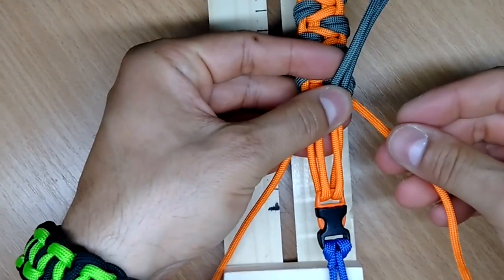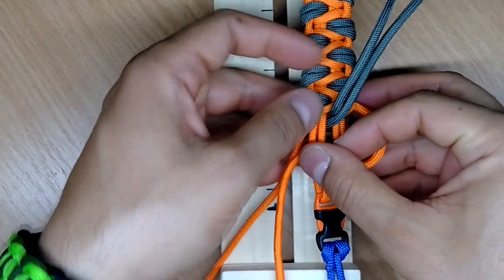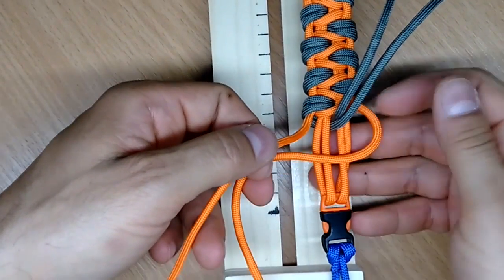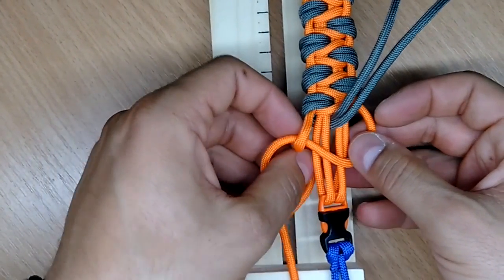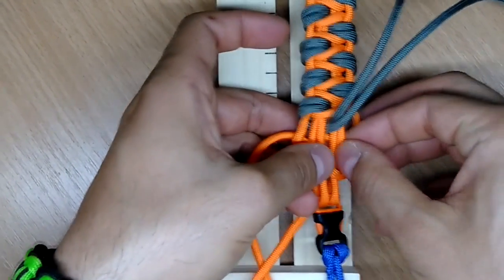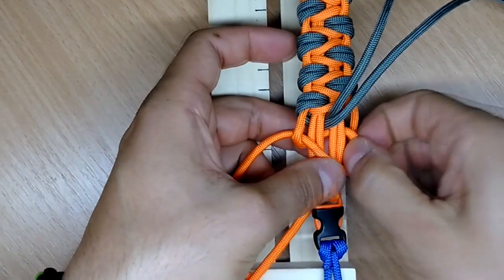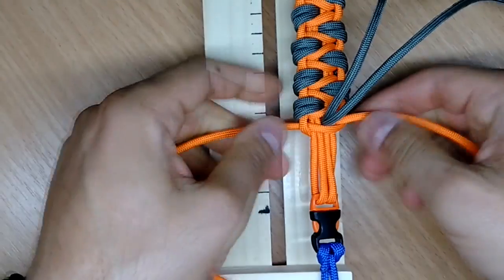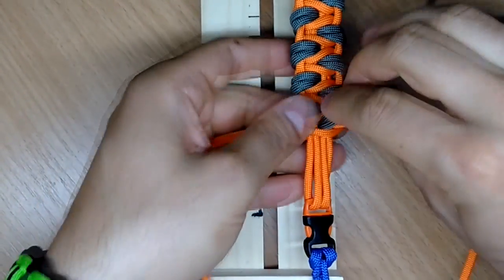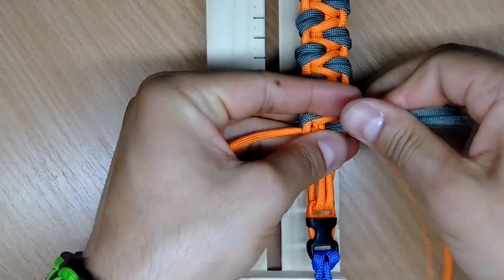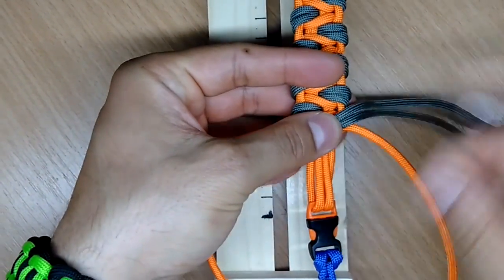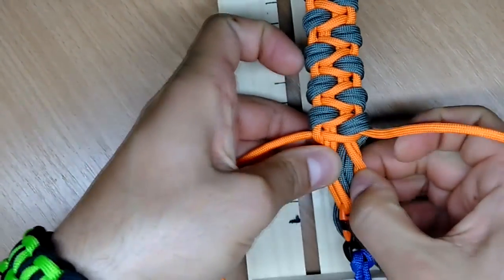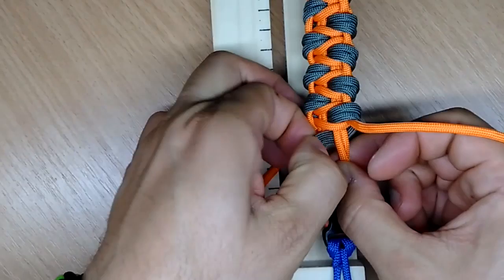Now the right one gonna go on top and the left one on top of the right one as you can see. And the left one gonna go all under, all over the bracelet and through the loop on the right side. Pull it tight. And then this gray one on the right side and again, under, through the middle of the bracelet.